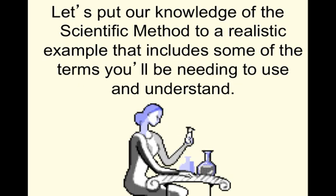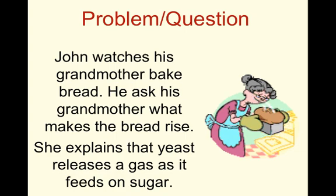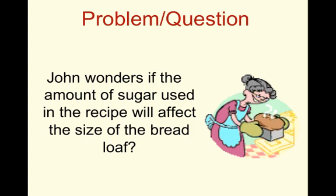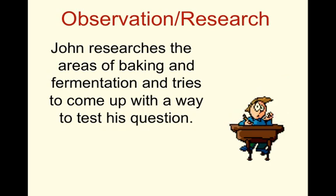So let's put our knowledge of the scientific method to a realistic example that includes some of the terms you'll be needing to use and understand. John watches his grandmother bake bread. He asks his grandmother what makes the bread rise. She explains that yeast releases a gas as it feeds on sugar. So John wonders if the amount of sugar used in the recipe will affect the size of the bread loaf — he's identified a particular question or problem. He researches the areas of baking and fermentation and tries to come up with a way to test his question.